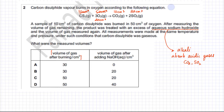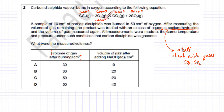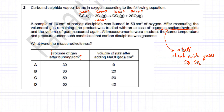Remember, for gases, the mole ratio and volume ratio are exactly the same. So: 10 cm³ CS₂ reacts with 30 cm³ O₂, producing 10 cm³ of CO₂ and 20 cm³ of SO₂. Since we added 50 cm³ of O₂ and only 30 reacted, 20 cm³ of O₂ is left. Total volume after burning: 20 (SO₂) + 10 (CO₂) + 20 (O₂) = 50 cm³.